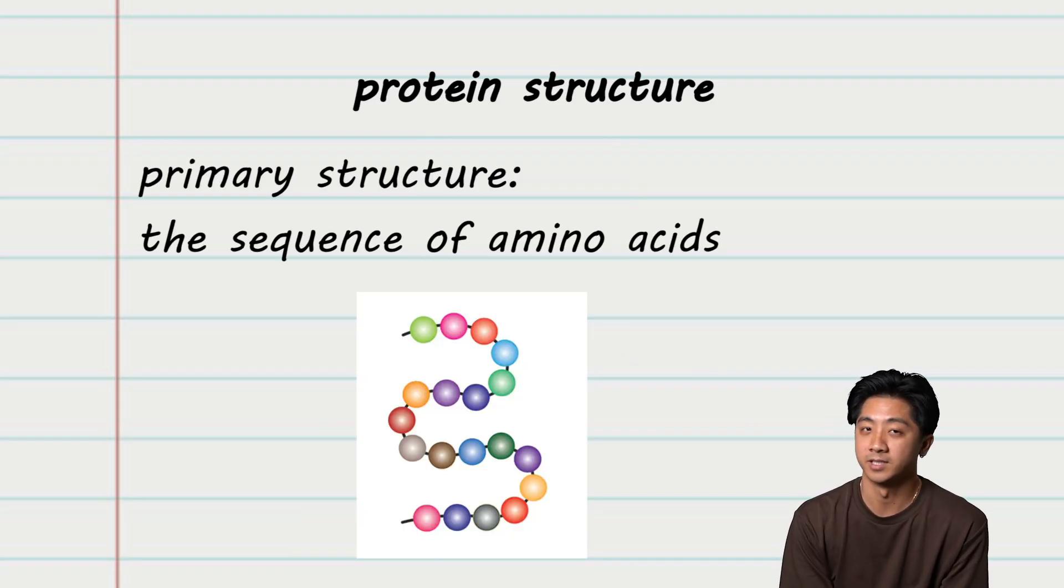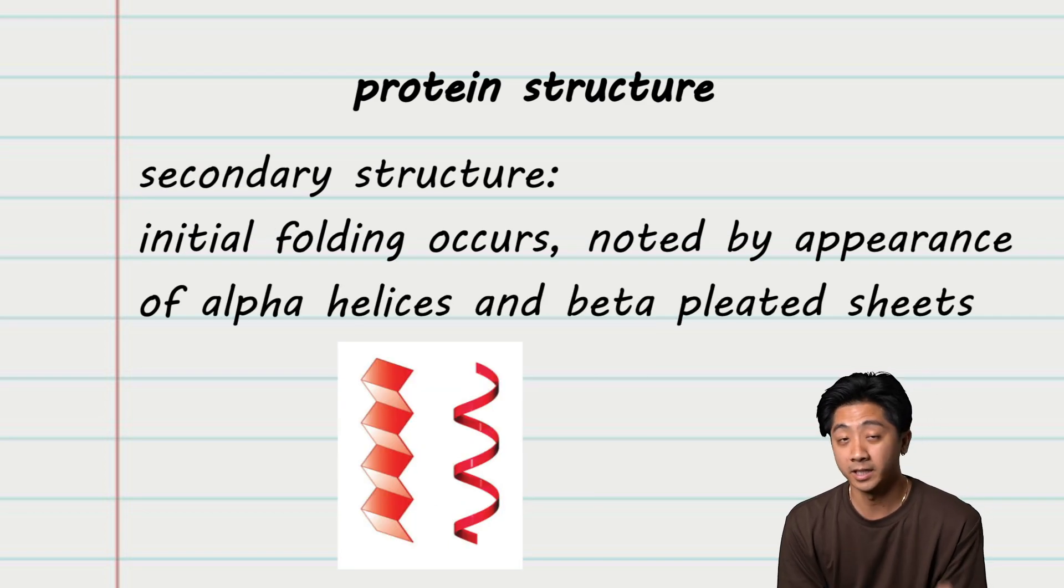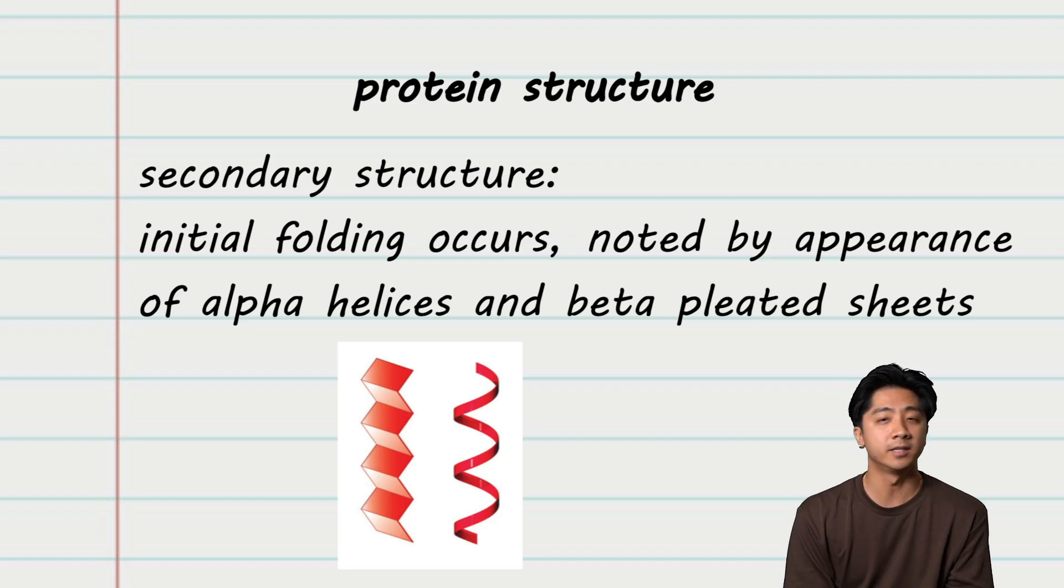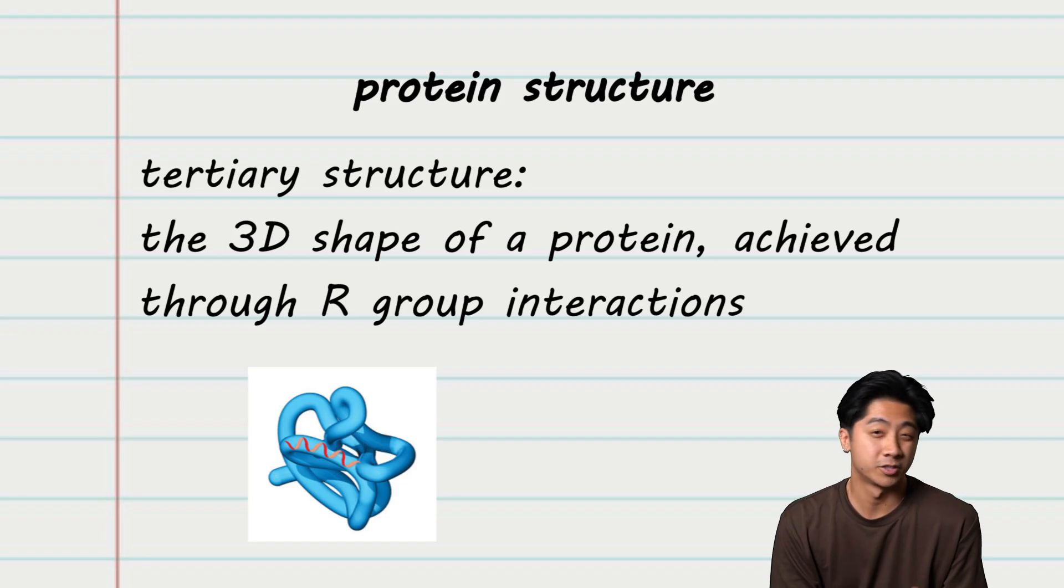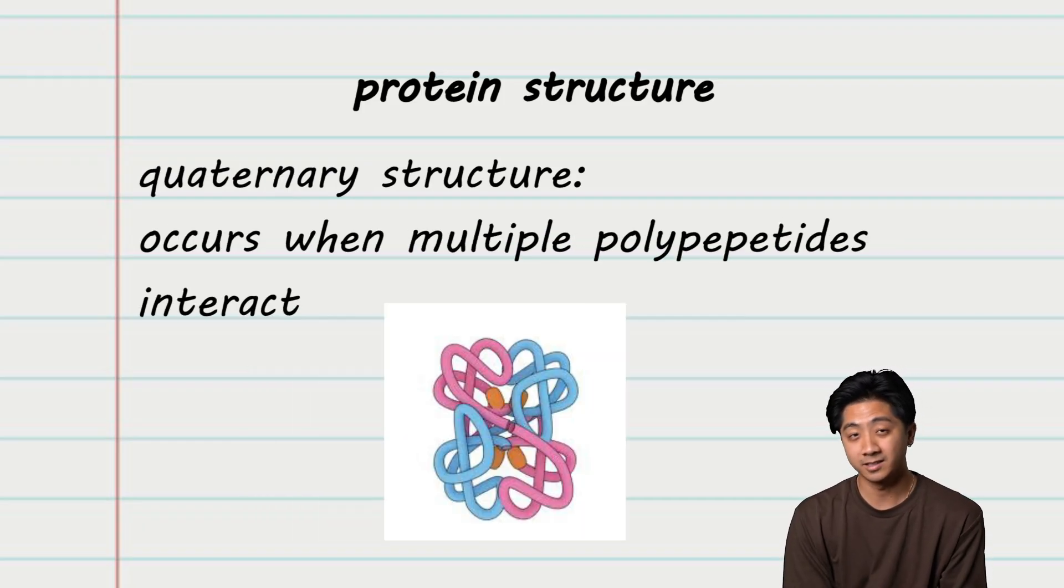Proteins fold up into a specific shape, and that shape will dictate its function. The structure of a protein can be broken down into four levels. The primary structure of a protein refers to its sequence of amino acids. The secondary structure refers to local folding, specifically noted by alpha helices and beta-pleated sheets. The tertiary structure is when a protein achieves its 3D shape. This is achieved through the interactions between the R groups of the amino acids. And lastly, the quaternary structure occurs when multiple polypeptides come together. So this doesn't happen with every single protein.